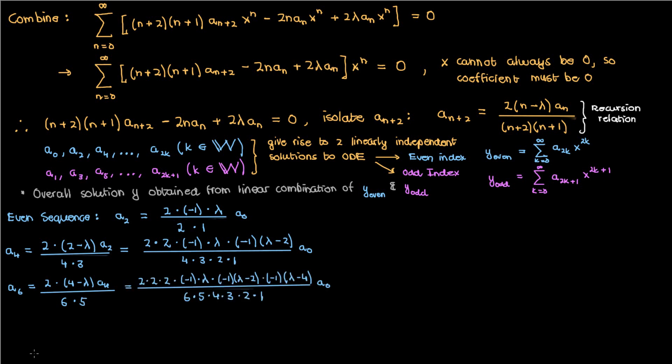Are you seeing a pattern yet? Well, you probably are. I invite you to pause the video and come up with a general formula relating any even coefficient to a_0. Alright, time's up. In general, every even coefficient a_{2k} is related to a_0 by some (-2)^k times λ(λ-2) and so on, all the way to λ-2k+2. This is all then divided by (2k)! and multiplied by a_0. I invite you to verify that this is indeed the pattern for the coefficients a_2, a_4, and a_6.